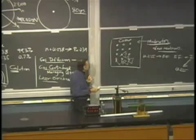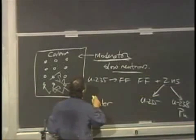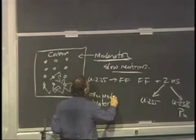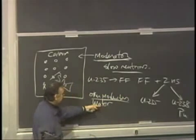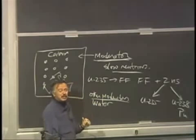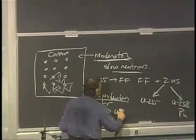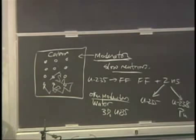There are other moderators you could use. In the United States, we tend to use water as a moderator. Okay, water as a moderator won't work with unenriched uranium. You have to have 3% uranium-235. So we use slightly enriched reactor-grade uranium that's produced at Oak Ridge.